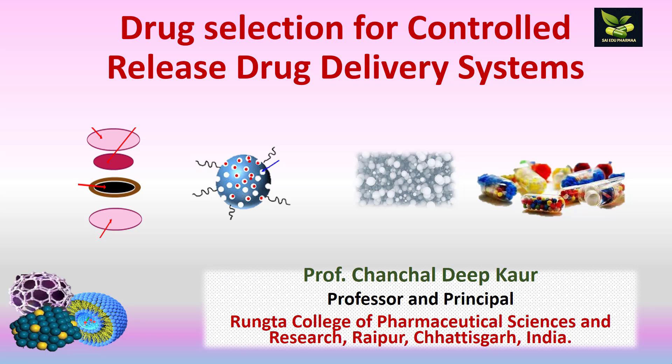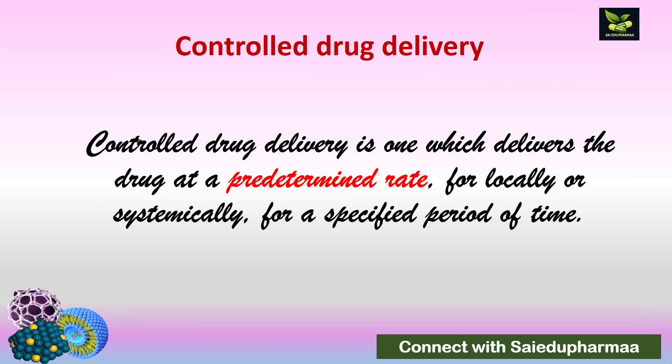Hello viewers. In the series of lectures on controlled release drug delivery systems, today we are going to see how drugs are selected — what are the criteria for selection of any candidate drug for preparing controlled release drug delivery systems. As you all know, a controlled drug delivery system is one which delivers the drug at a predetermined rate, locally or systemically, for a specified period of time. Basically, in controlled release we monitor the amount, rate, and location where we want to deliver the drug.